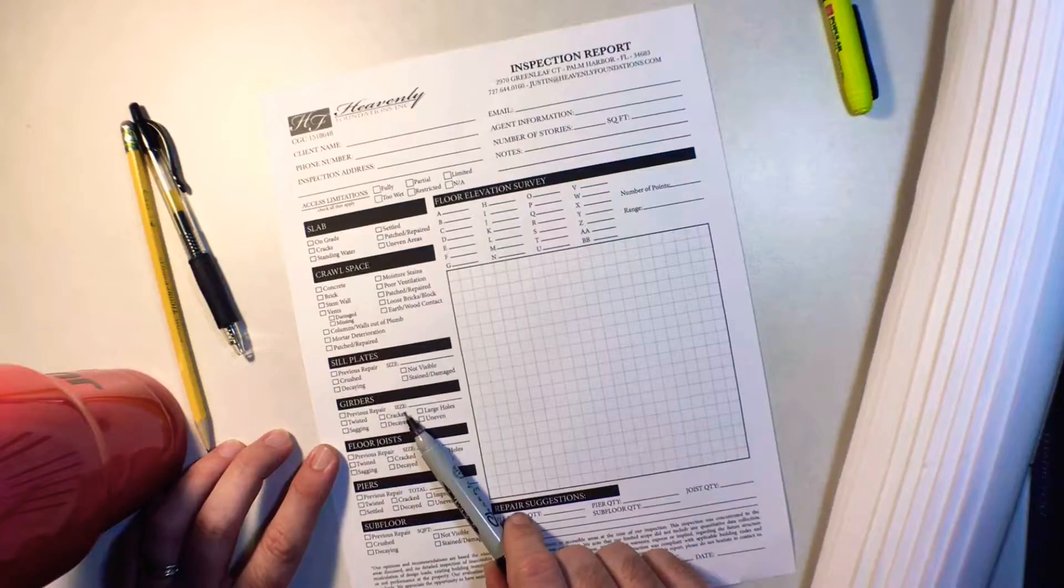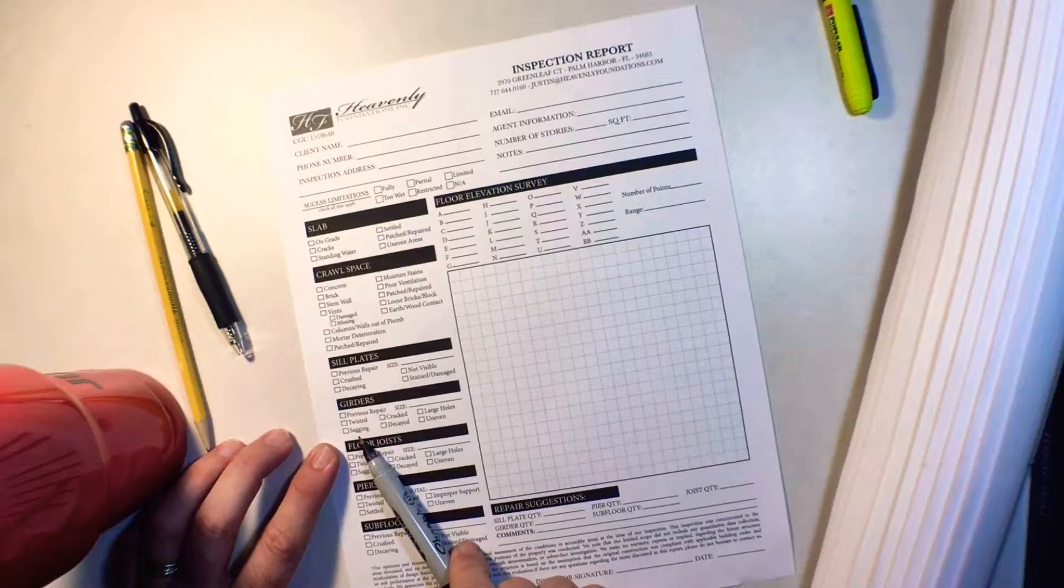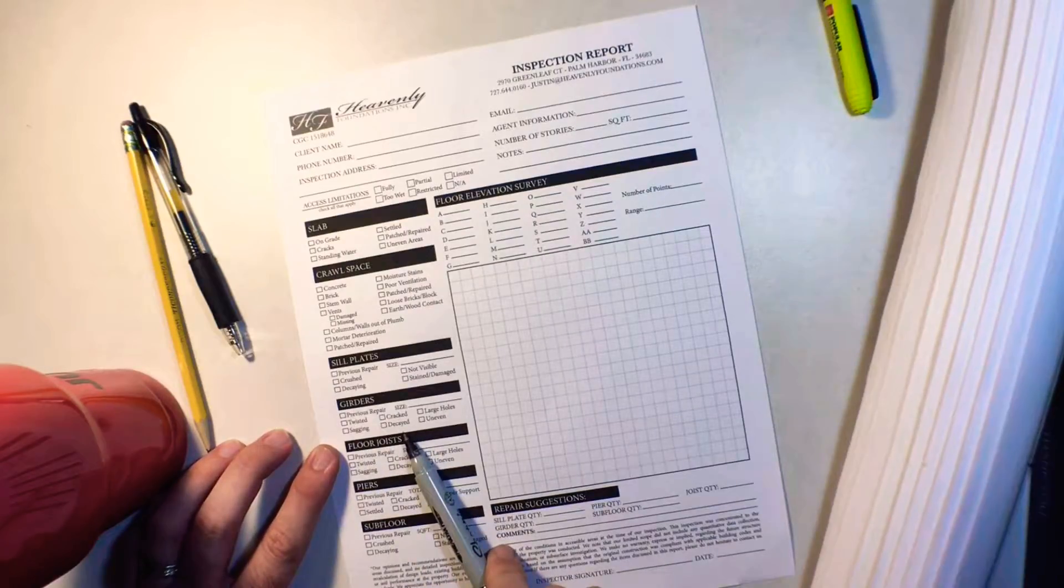The girders are the main beams that are up underneath your house and we're going to check for twisted, is there sagging, crack, decay on them. We're going to indicate that.